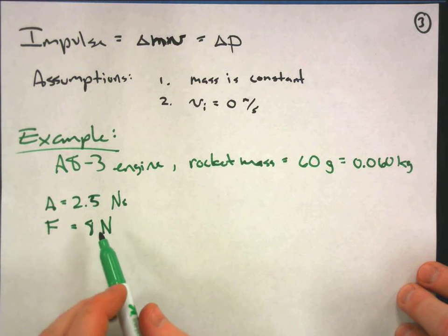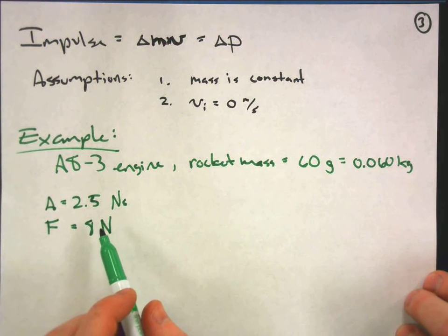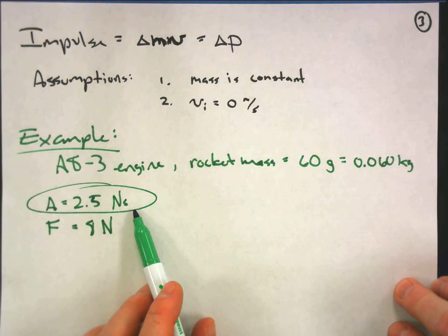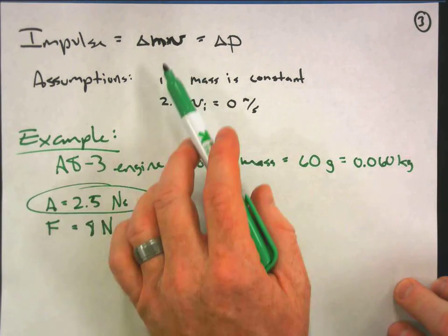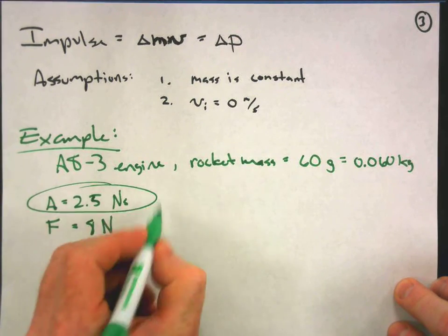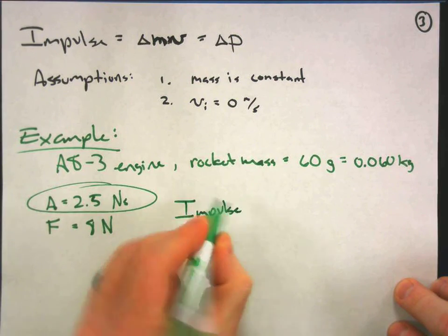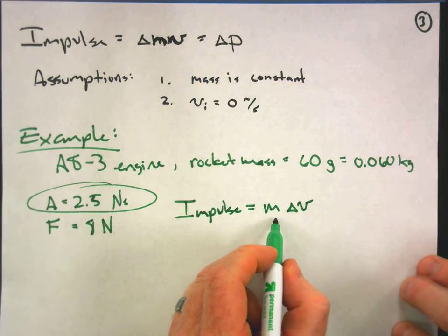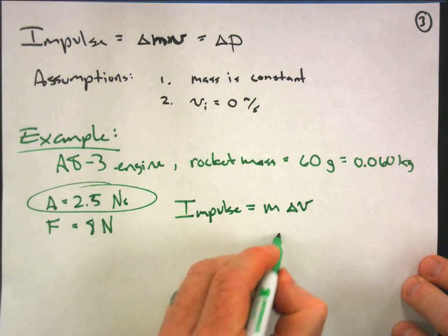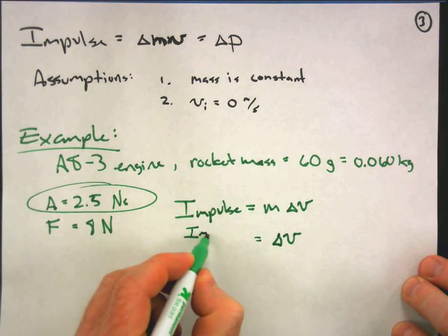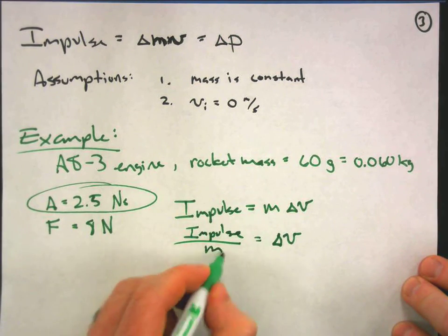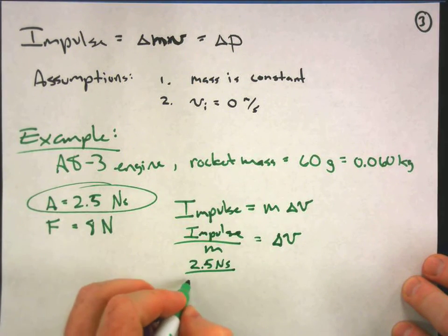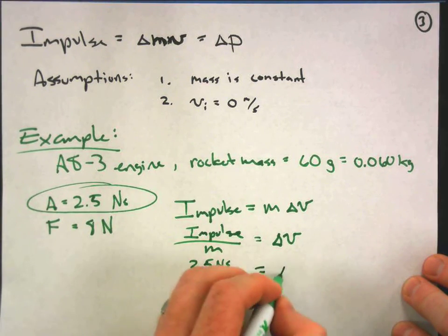From these two numbers we could actually figure out the amount of time that the fuel will burn, but that's not what we really need. We can just directly use that because we're looking for a change in velocity here. We have the impulse already. We're going to say that impulse equals mass times delta v. Remember mass is going to be constant. What I want to find is the delta v. So I'll have to do impulse divided by mass, and I got 2.5 newton seconds divided by the mass which I said was 0.06 kilograms. And that's my delta v.